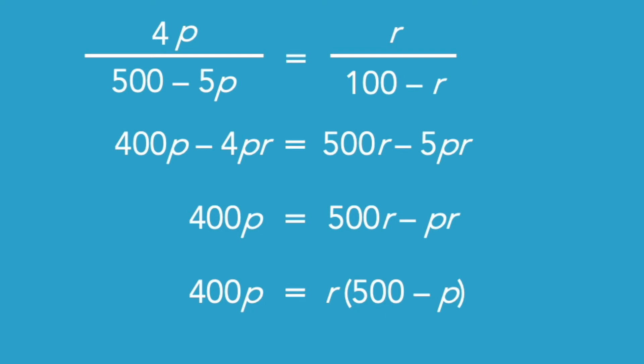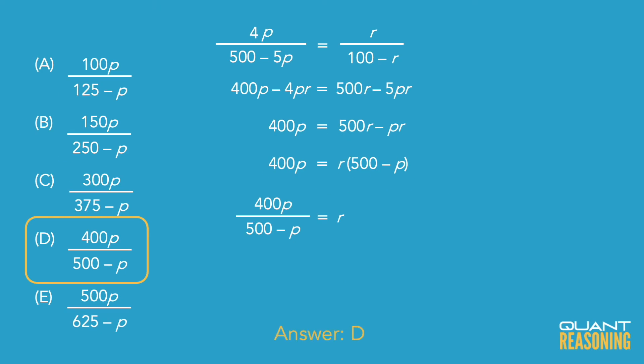So you'd have 400P equals R, parentheses, 500 minus P. And the next step after that would be to just divide both sides by 500 minus P. But at that point, you should already be able to see that that's exactly what the correct answer, answer choice D, looks like.